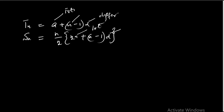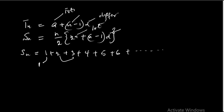Now, if I have a series of natural numbers — 1 plus 2 plus 3 plus 4 plus 5 plus 6, and so on — if you look at this closely, the first term a is 1 and the difference between each term is also 1. Between 2 and 3 is 1, between 3 and 4 is 1, between 4 and 5 is 1. So a equals 1 and d equals 1.